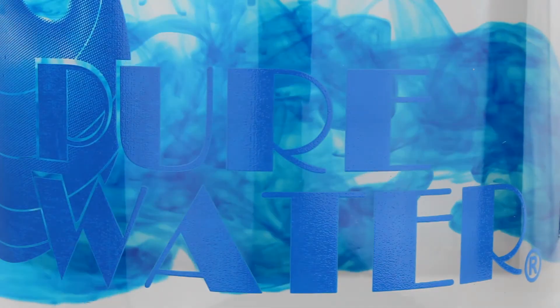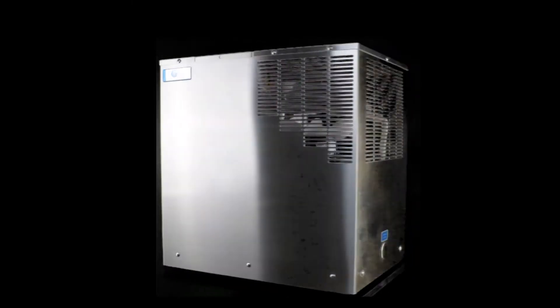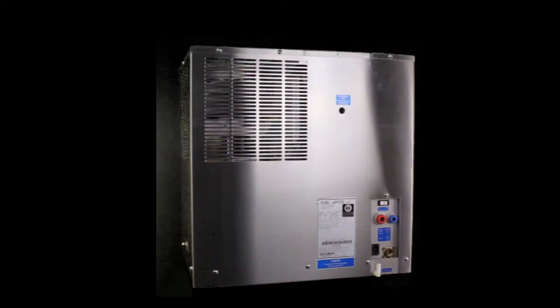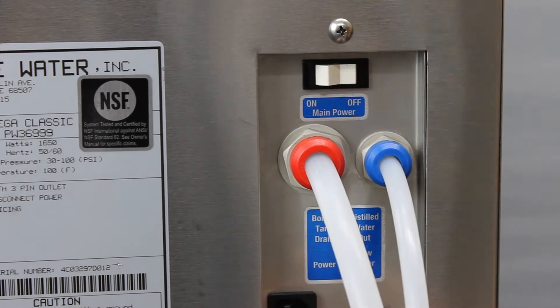Welcome to our video on changing the post filter on the Pure Water Mega Classic. First, locate the power switch on the back of the distiller and flip it to the off position.